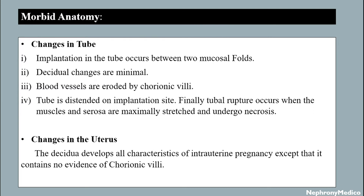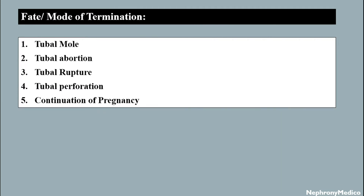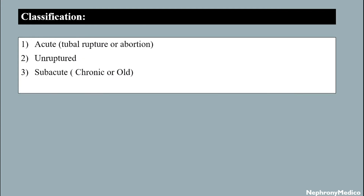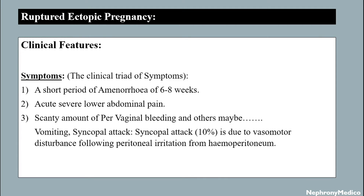Fate or mode of termination: there may be tubal mole, tubal abortion, tubal rupture, tubal perforation, or continuation of pregnancy. Classification includes acute tubal rupture or abortion and rupture, subacute, chronic or old rupture, and atrophic pregnancy.